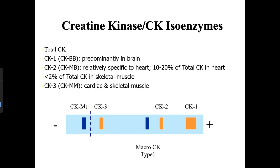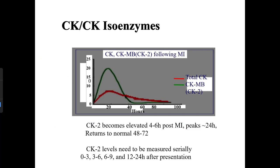CK-MB (CK2) is the isoenzyme most specific to the heart. CK2 becomes elevated 4 to 6 hours post-MI, peaks at 24 hours, and then returns to normal relatively quickly. If a patient waits four or five days before getting tested, CK2 may be missed entirely.